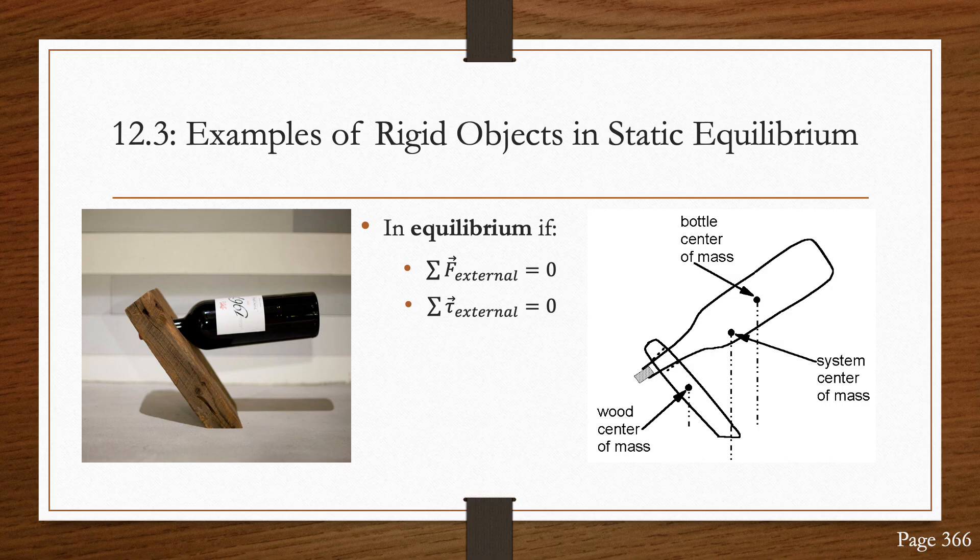Note that the second condition can only be satisfied if the center of gravity of the system is directly over the support point. Looking at the graphic on the right, we have the wood center of mass, and we have the bottle center of mass. In between those is the system center of mass, which is right above the support point.